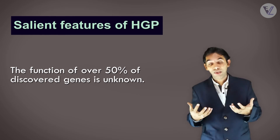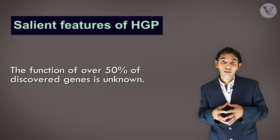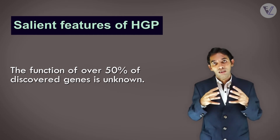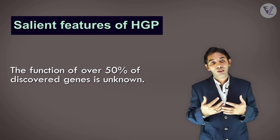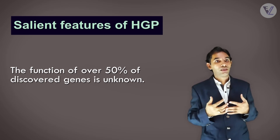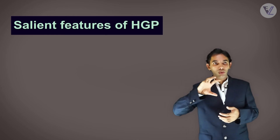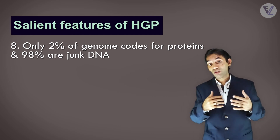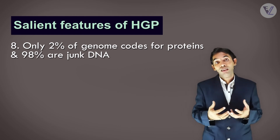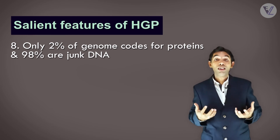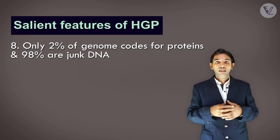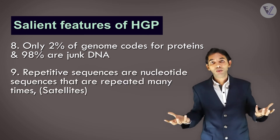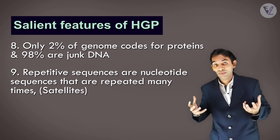The functions of over 50% of the genes are yet to be known — meaning only about 50% of genes are currently understood, while the other 50% remain to be deduced. Almost 2% of the genome codes for proteins, which means 98% of the genes do not code for proteins — we call these junk DNA or junk genes.